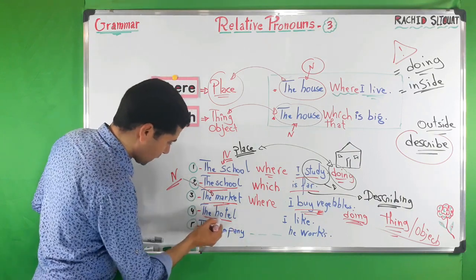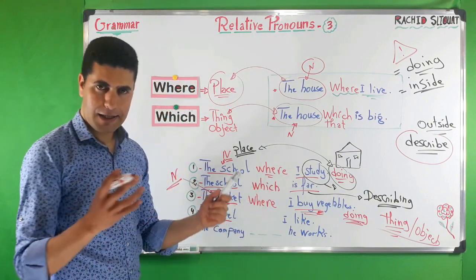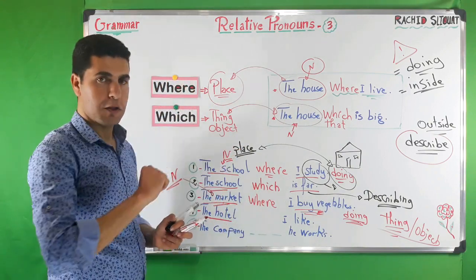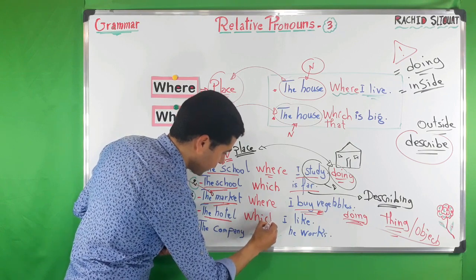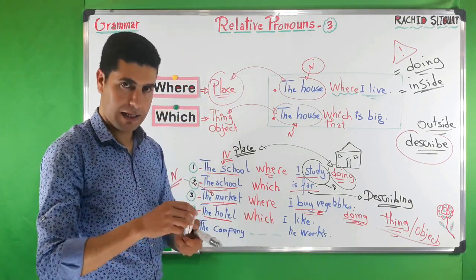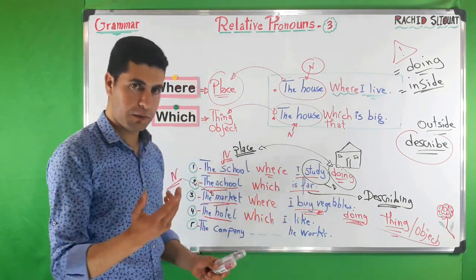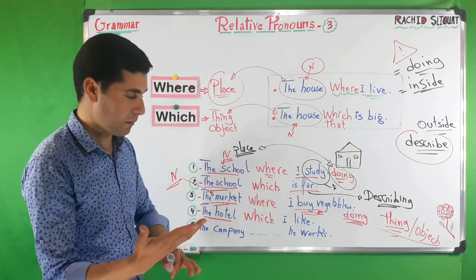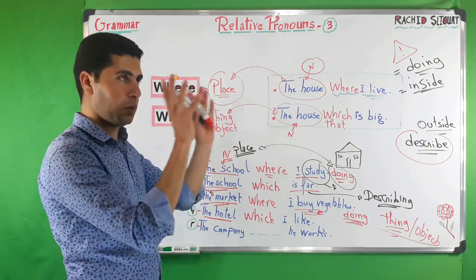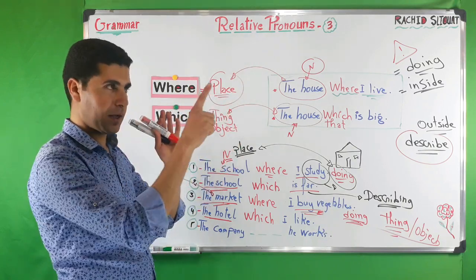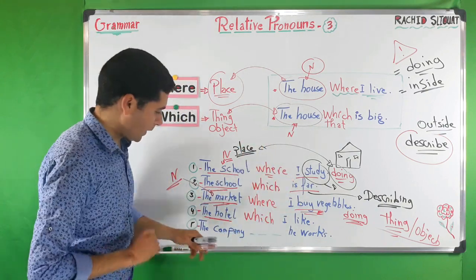Number four: 'The hotel I like.' The noun is 'the hotel.' Here you are not talking about something you do inside the hotel — you are describing it from outside. So we say: 'The hotel which I like.' You are just describing the hotel, not performing an action inside it.